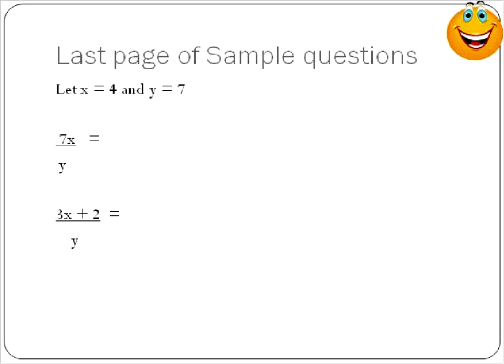For the last page of equations, we let x equal 4 and y equal 7. This section uses fractions. So we have 7 times x — substituting in 4 for x — all divided by 7. We do multiplication first: 7 times 4 is 28, divided by 7, which is equal to 4.